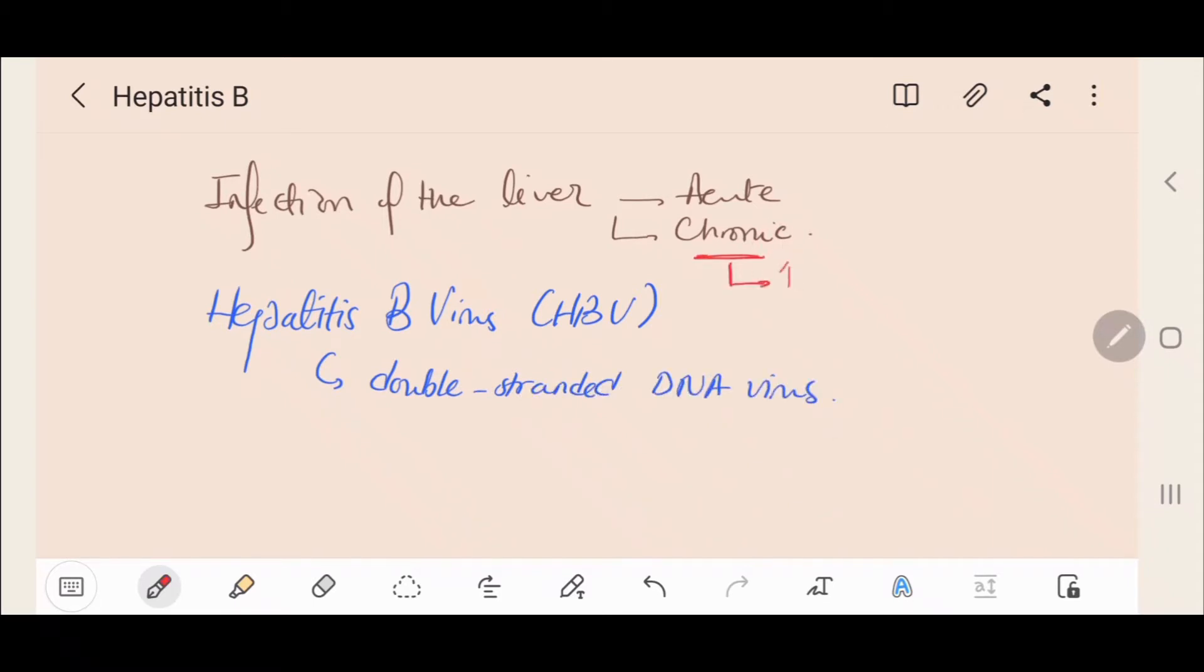The risk of developing chronic Hepatitis B is highest if infected at birth or less than 5 years. Infection as an adult has a less than 5% risk of progression to chronic Hepatitis B.